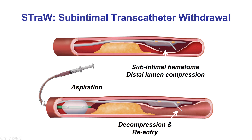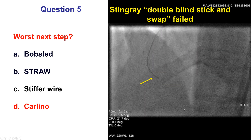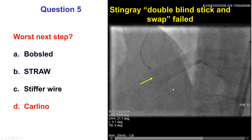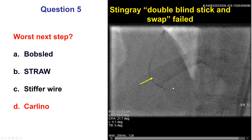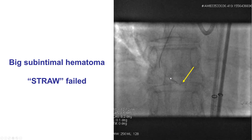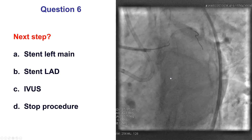The straw technique tries to decrease the size of the subintimal hematoma by aspirating either through the lumen of the stingray balloon itself or with a separate over-the-wire balloon more proximally. By aspirating and decreasing the hematoma, the distal true lumen is decompressed and becomes a better target for re-entry. In this case, what should not be done is enlarge the dissection plane — the goal is to minimize it. We did the bobsled, advancing the stingray to a slightly more distal spot, but after multiple attempts we just could not get back in. We had a fairly large hematoma and despite aspiration we could not resolve it.